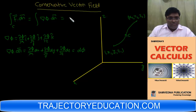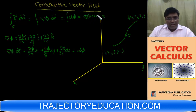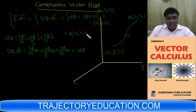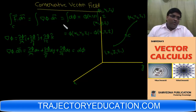Integrating del Phi dot dr along the curve gives Phi evaluated from the initial point (x1, y1, z1) to the final point (x2, y2, z2). The result is the value of the potential at the final point minus the value of the potential at the initial point.